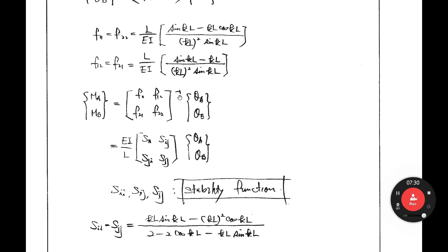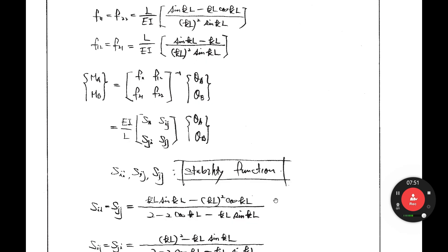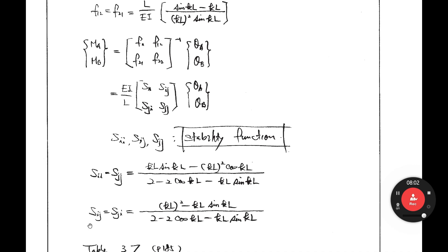If you calculate the inverse of this flexibility matrix you can get this equation with entries SII, SIJ, SJI, SJJ — these are called stability functions. SII and SJJ have the form involving KL and sin(KL), while SIJ and SJI involve KL-squared minus KL·sin(KL), and so on. That is the stability function.